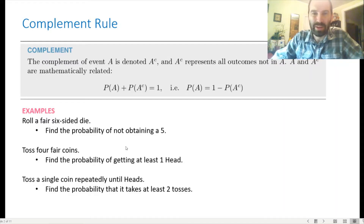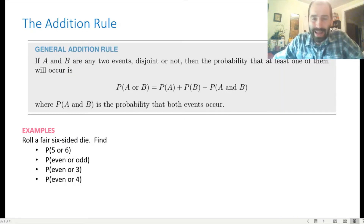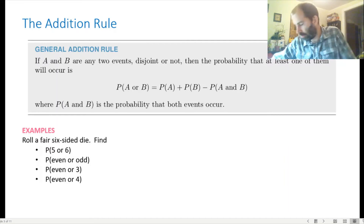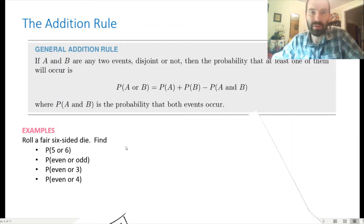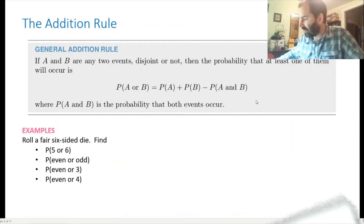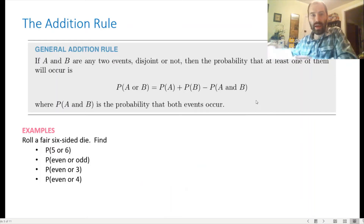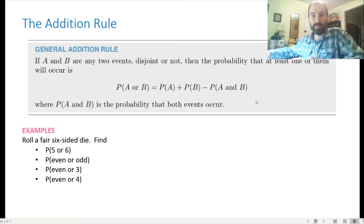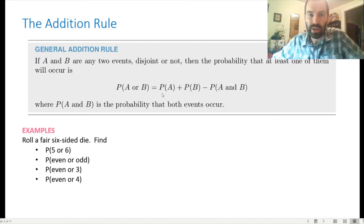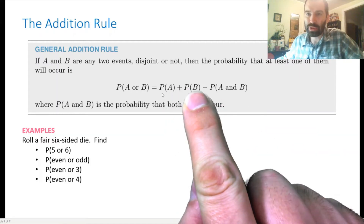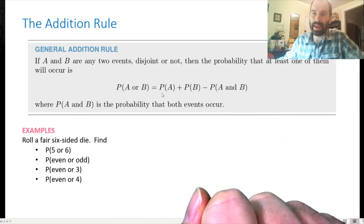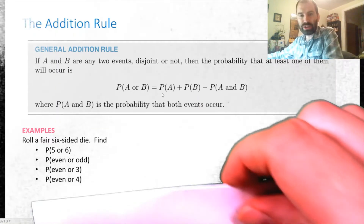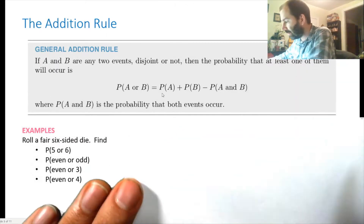Next up is the addition rule. The addition rule handles the word 'or.' If A and B are any two events, then the probability that at least one of them occurs — the probability of A or B — equals the probability of A plus the probability of B minus the probability of A and B.